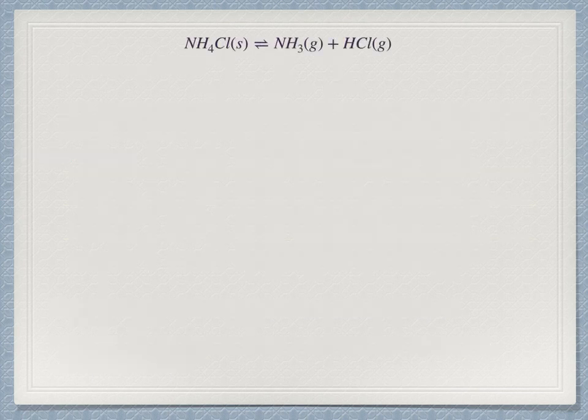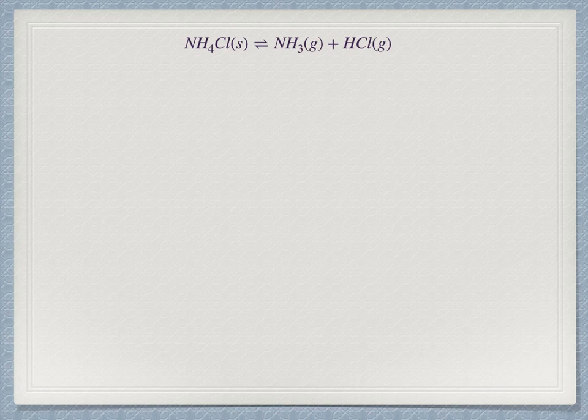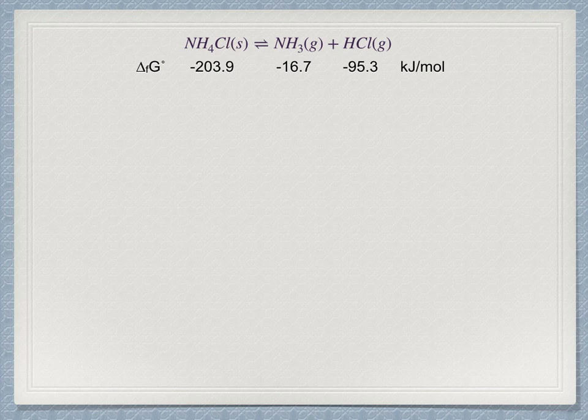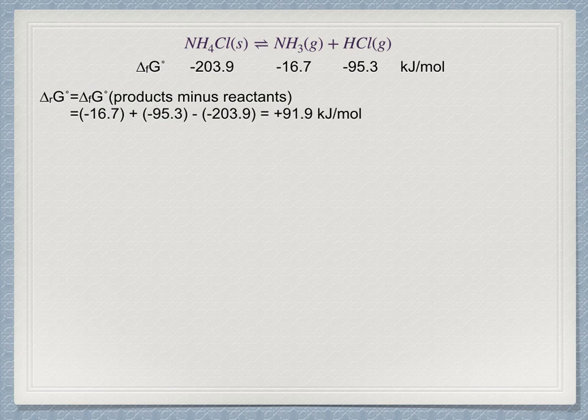So now go back to the questions posed at the beginning of the video. First, the decomposition of ammonium chloride. We now know that the answer lies in knowing the Gibbs energy change for the reaction. We go to the thermodynamic tables and obtain the Gibbs energy change of the formation processes for each substance. Those values are minus 203.9, minus 16.7, and minus 95.3 all in kilojoules per mole. The Gibbs energy change for the reaction is just the products minus reactants calculation of the Gibbs energy of formation for the reaction participants. So it's minus 16.7 plus minus 95.3 minus a negative 203.9, which equals plus 91.9 kilojoules per mole.